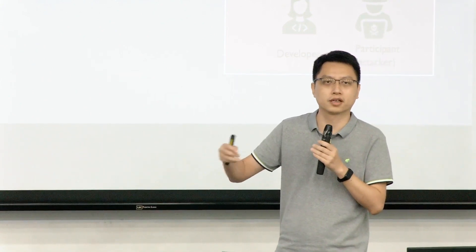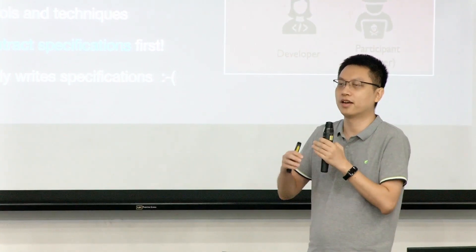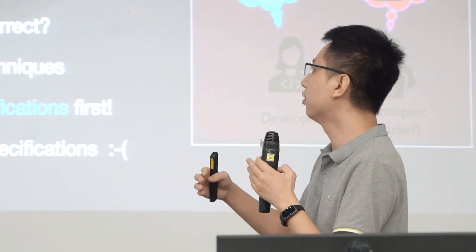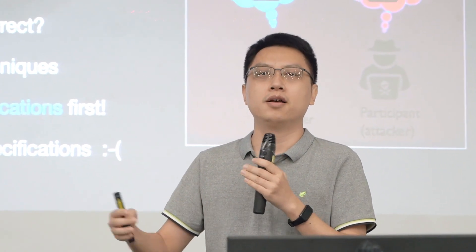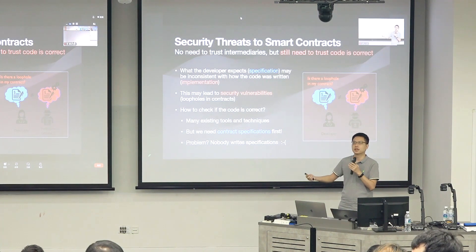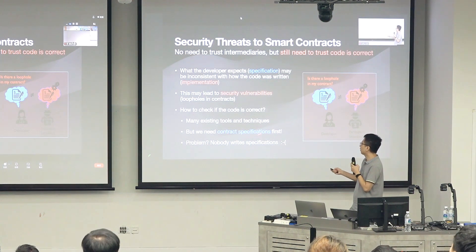Specification is a software engineering term — a way to explicitly write out what the developer's intentions are. We must always make sure the implementation matches the specification. If there are inconsistencies, this is seen as a loophole in the contract agreement, and this loophole can then be exploited by attackers to compromise the security of the contracts.